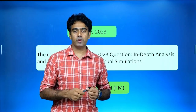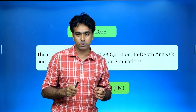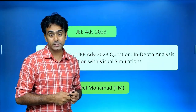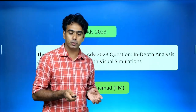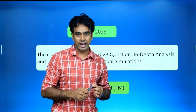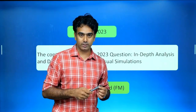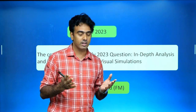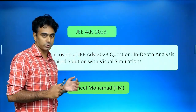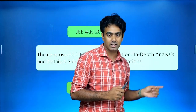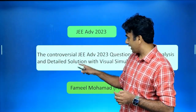Hi dear students, in this video we will discuss one of the questions of JEE Advanced 2023 from physics. It's a question from Paper 2, question number 5, from the optics part. What is peculiar about this question is that it's a controversial question, and I will go for an in-depth analysis with a visual simulation.